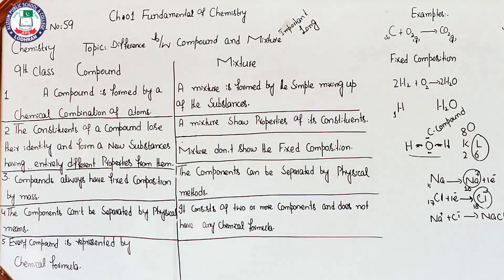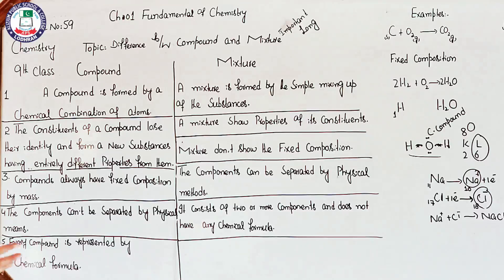We need to repeat short questions in the paper. The last point about mixture is that it consists of two or more components and does not have any chemical formula. In a mixture we cannot assign a formula — we say sugar is dissolved in water, or salt is in the salad bowl, or there is an apple. We can represent it by name but not by a chemical formula. Compound points are exact, but there are alternative points in the mixture.